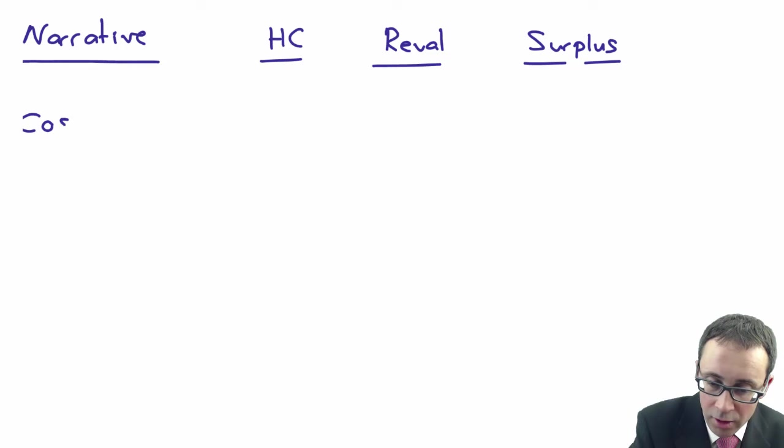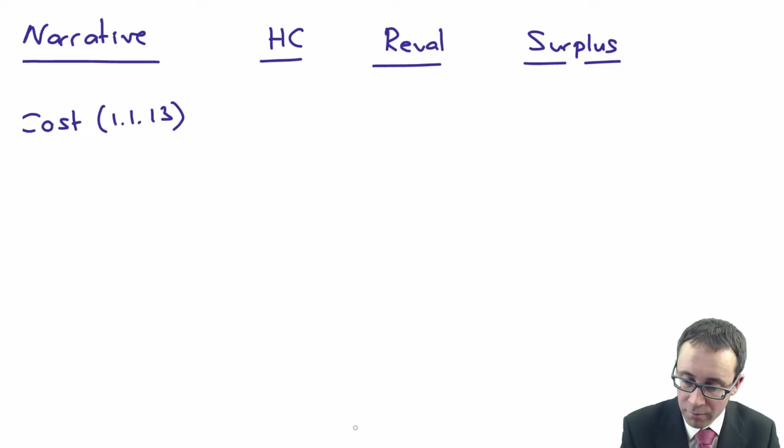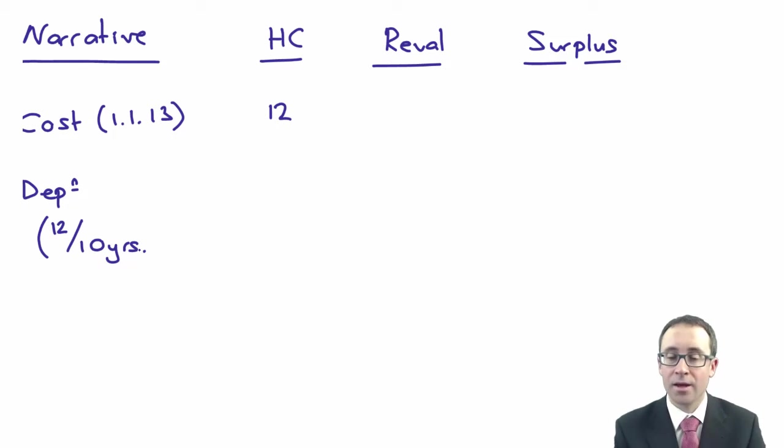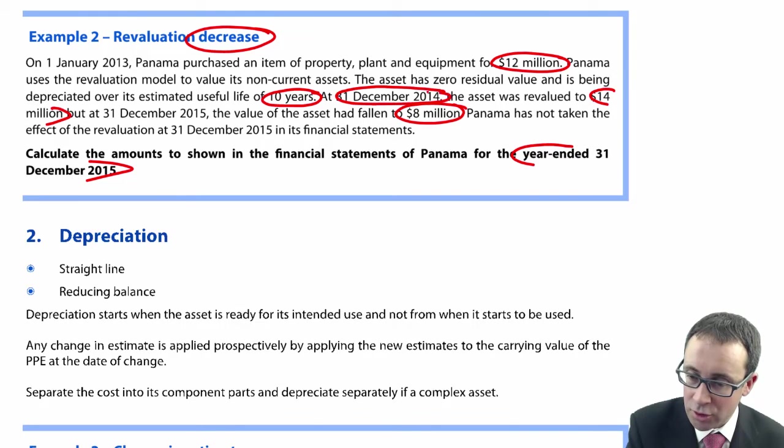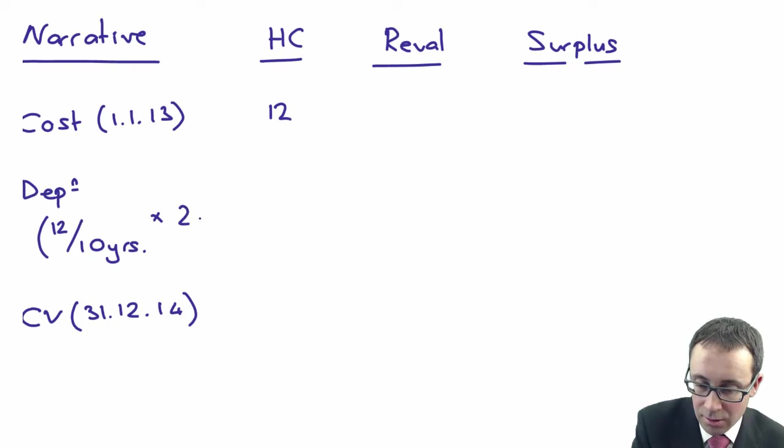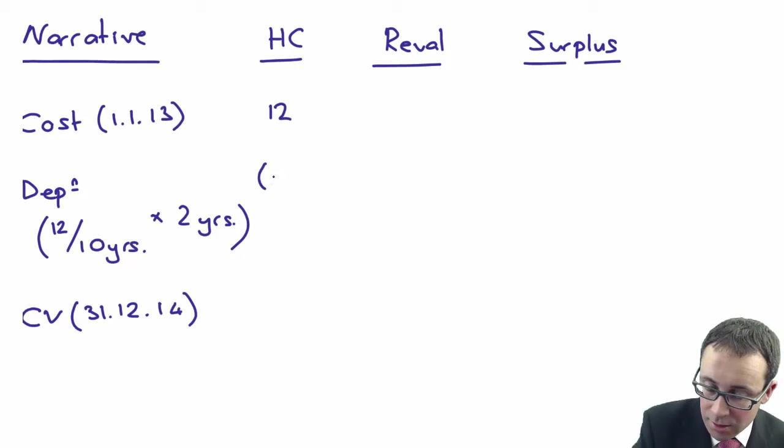We'll look at the narrative, historic cost, revaluation and the surplus. So we look at the cost. On the 1st of January 2013, we bought it for 12 million. Then we are going to depreciate it. 12 million over 10 years. However, do be careful. The next part where we need to work out the value of the asset is at December 2014. So we need to work out the carrying value at the 31st of December 2014. So that's two years, 2013 and 2014.